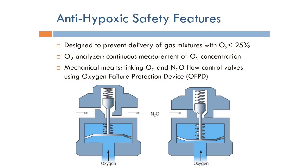A critical part of the design of the anesthesia machine is the anti-hypoxic safety features. These are designed to prevent the delivery of gas mixtures with oxygen less than 25%. This involves oxygen analyzers, which allow for continuous measurement of oxygen concentration, and whenever the oxygen concentration in the gas mixture goes below 25%, the system is shut off.